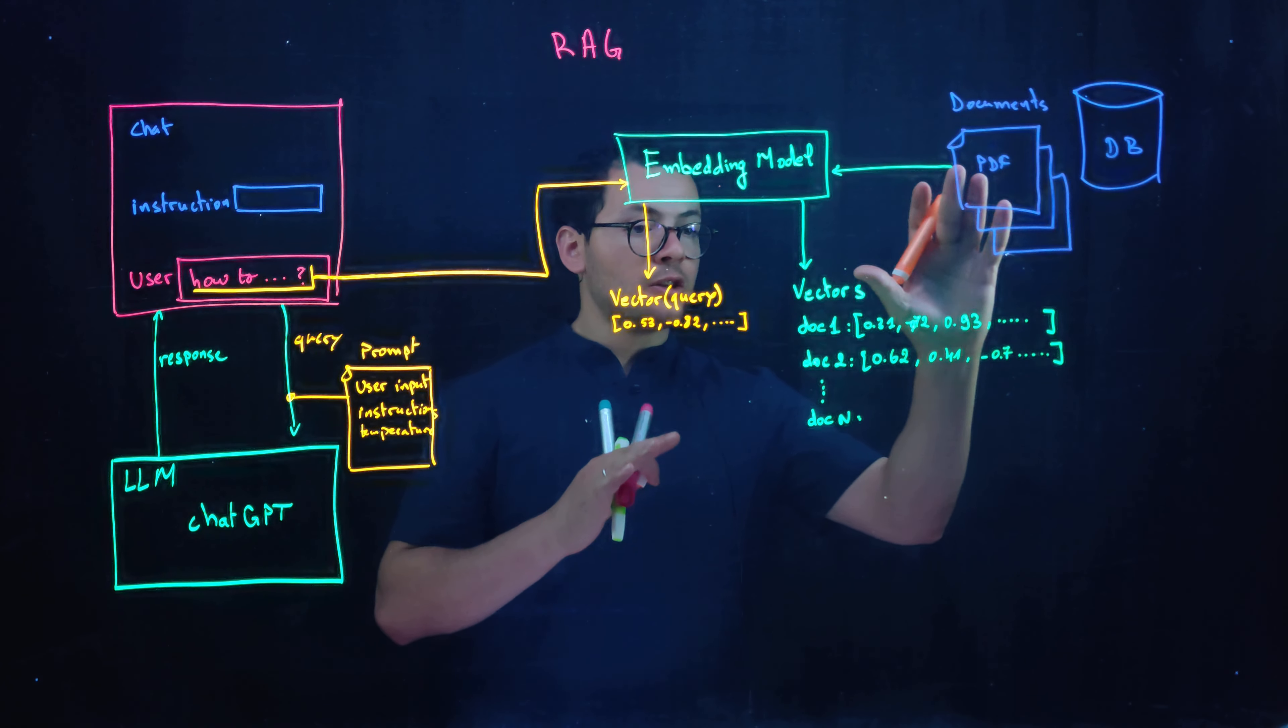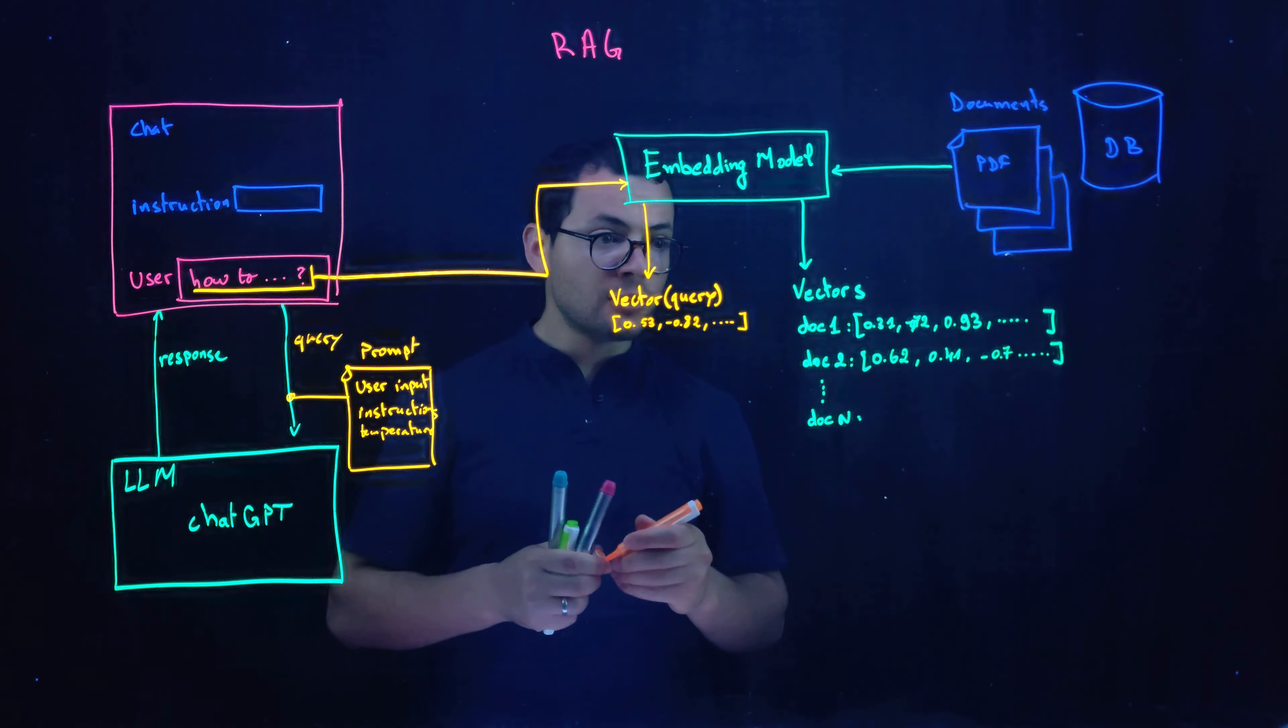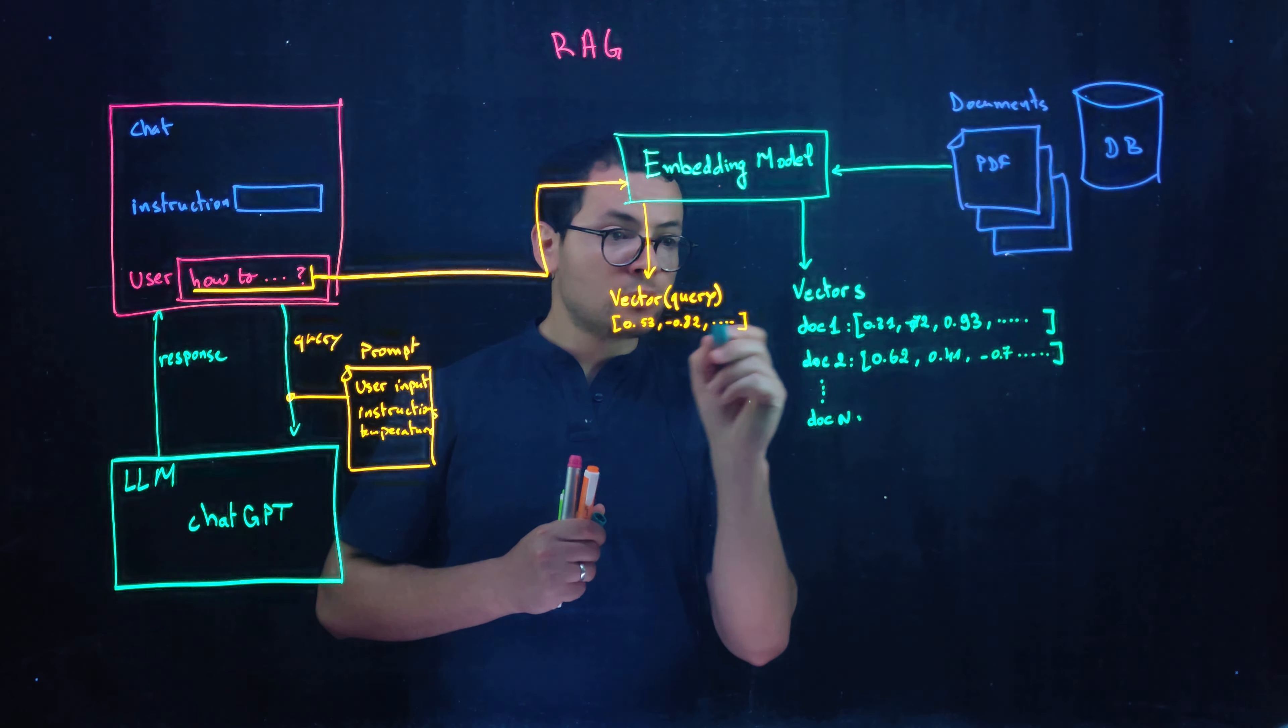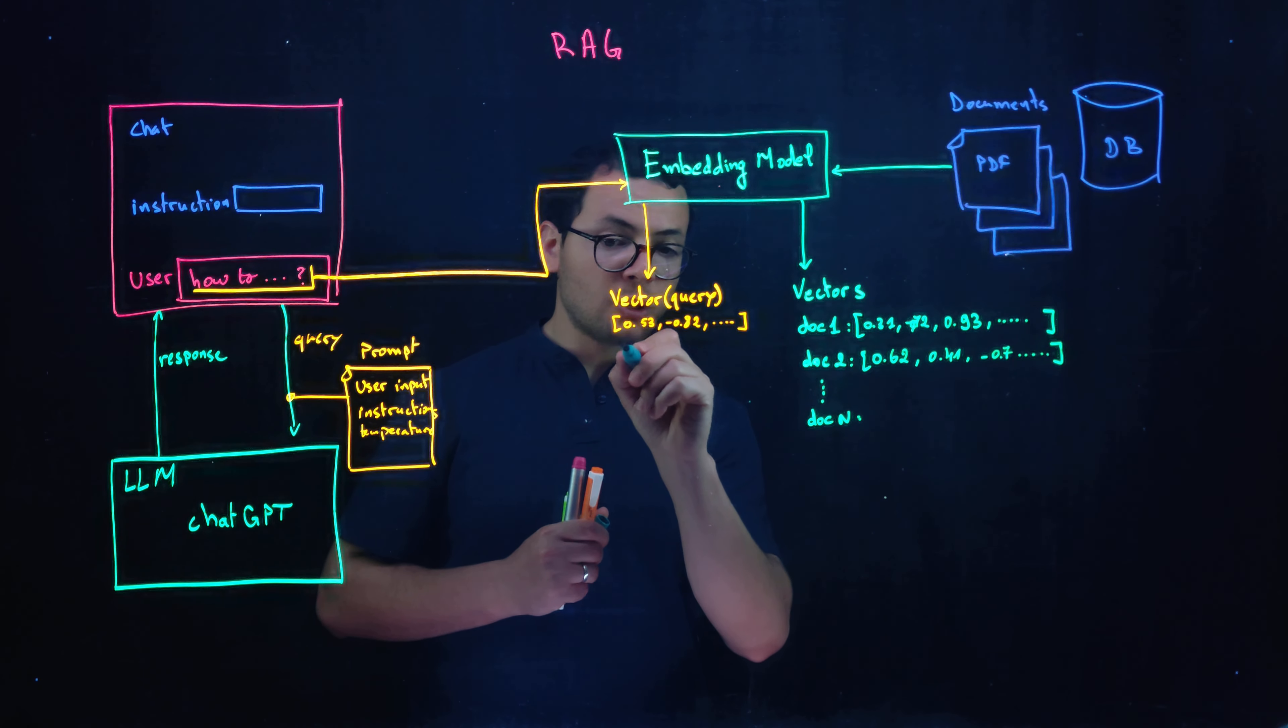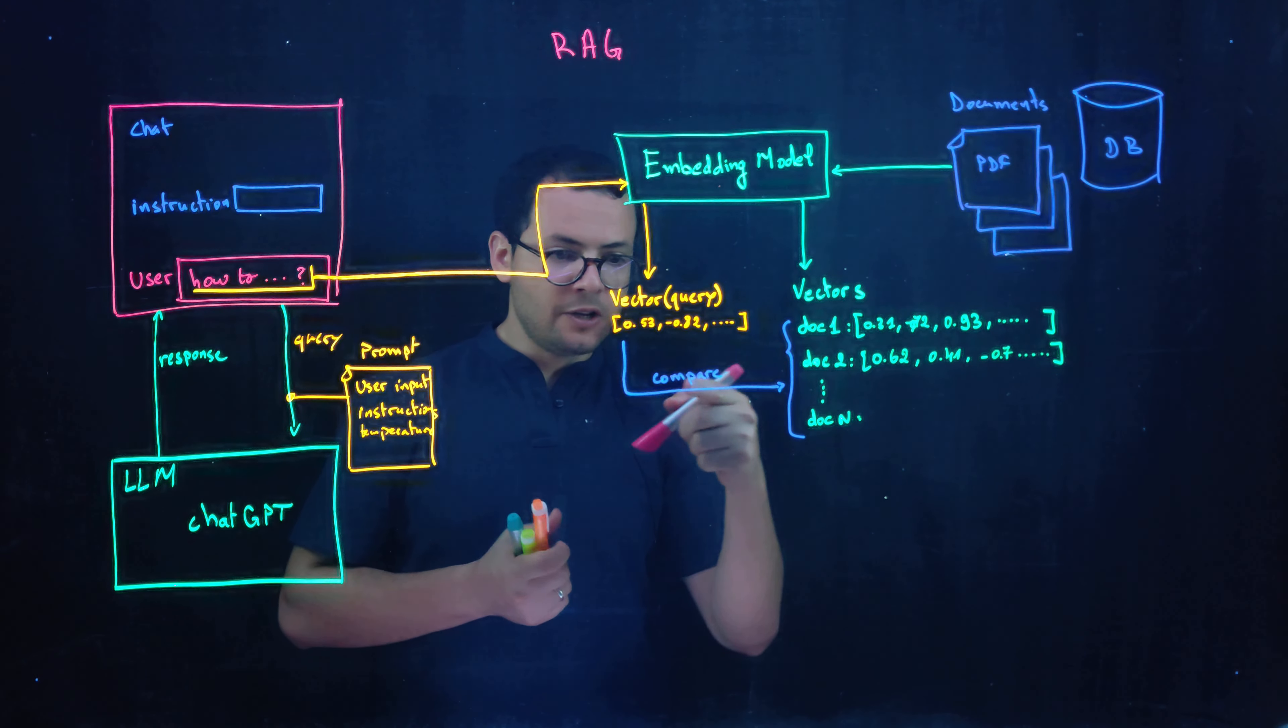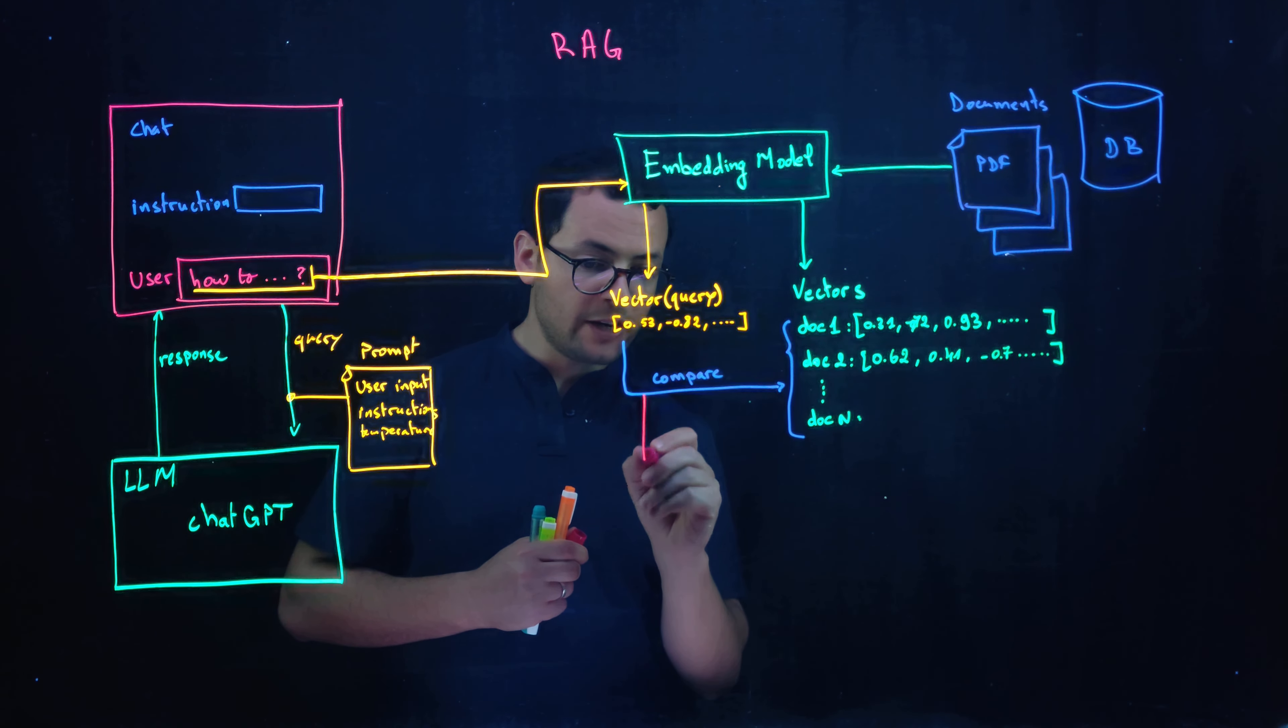And because here documents and this user query are all represented within vectors, we'll just compare the user vector to the vectors from the documents. So we'll take this vector and then we'll compare with all of these vectors. And the result of this comparison is that here we'll get the similarities.